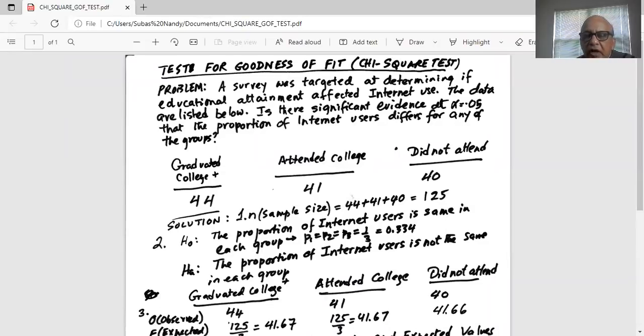Test for goodness of fit, chi-square test problem. A survey was targeted at determining if the educational attainment affected internet use. The data are listed below. Is there significant evidence at alpha equal to 0.05 that the proportion of internet users differs for any of these groups?